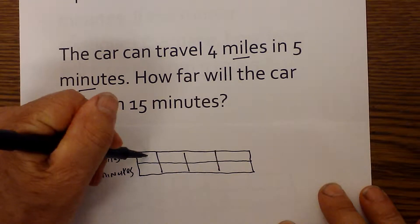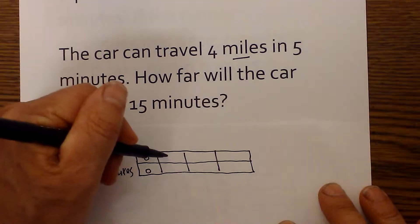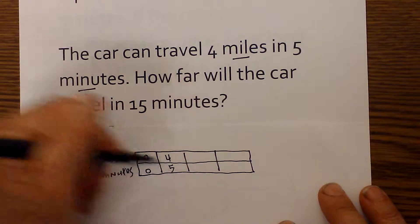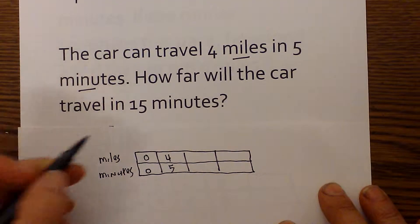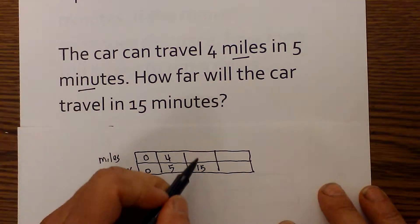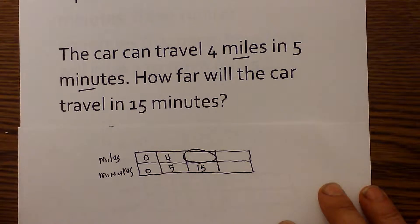I then will enter zeros. I'm going to start with a zero. I then enter in the information I'm given. I'm given four miles in five minutes. And I'm also given that you travel 15 minutes. And I need to know this missing information which is how many miles did they travel in 15 minutes.